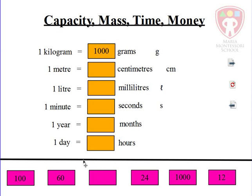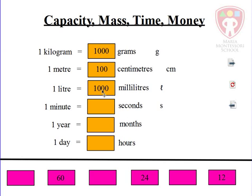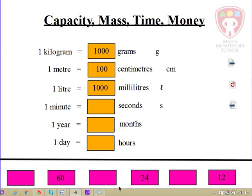One meter is how many centimeters? We know that one meter is 100 centimeters, because 'centi' means 100. One liter is how many milliliters? A thousand milliliters make a liter.